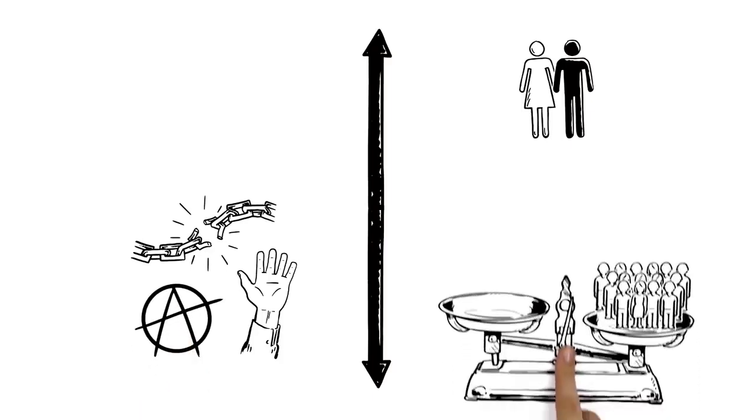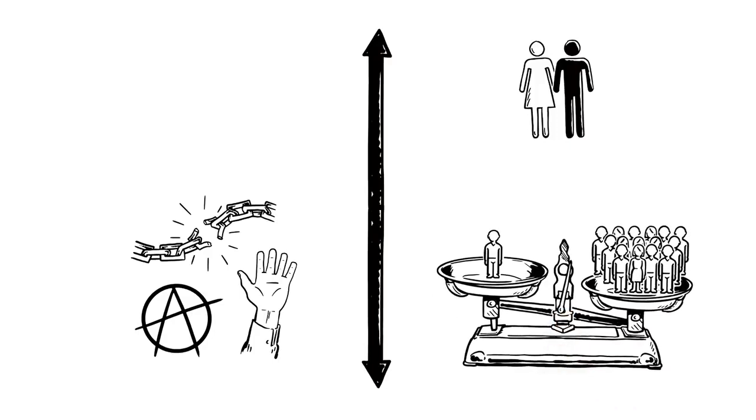While at the top of the graph, people believe in group rights over individuals. At the very top, we find totalitarian regimes, communists on the left and Nazis on the right.